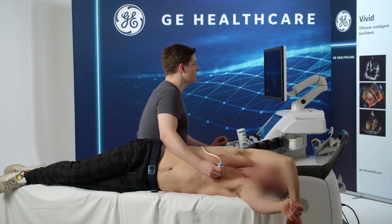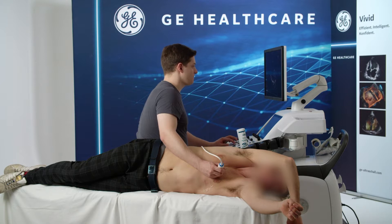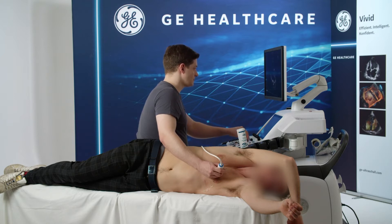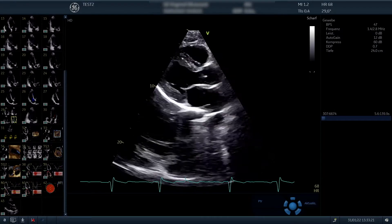We start with the parasternal long axis view. In the case of the parasternal long axis view, we start at the clavicular, go down intercostal spaces until we arrive at the third or fourth intercostal space. The marker is located to the right shoulder of the patient and that's the first view we get.